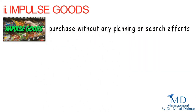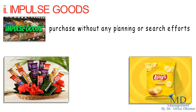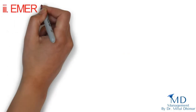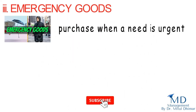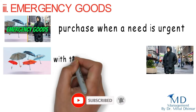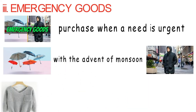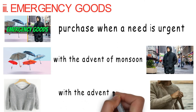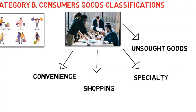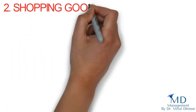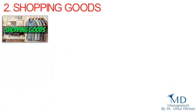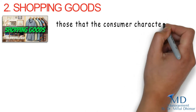Number three: emergency goods. Emergency goods are purchased when a need is urgent, such as umbrellas and raincoats with the advent of monsoon, or pullovers and sweaters with the advent of winter. The second sub-point under consumer goods is shopping goods — those that the consumer compares on suitability, quality, price, and style.